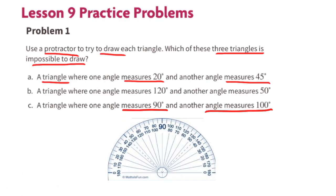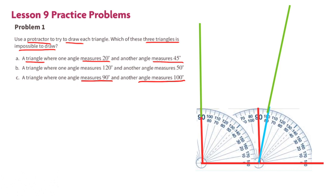Part c: a triangle where one angle measures 90 degrees and another angle measures 100 degrees. Here's the 90 degree angle and here's the 100 degree angle. You can see that these angles will never meet, so they won't form a triangle. The sum of two of the angles has to be less than 180 degrees, so this won't form a triangle.